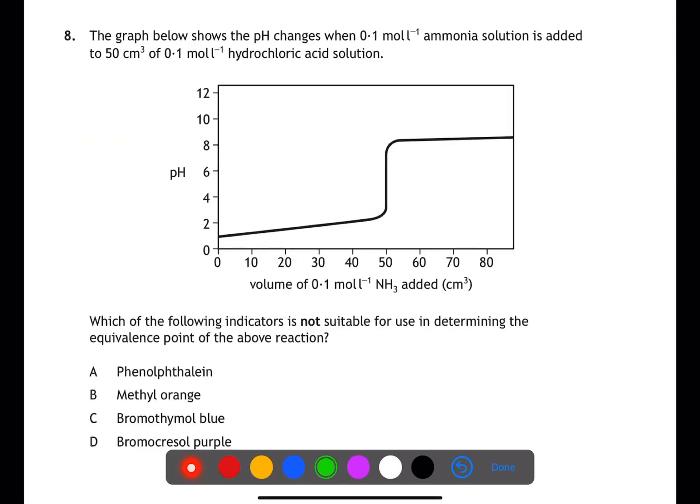To find the equivalence point of the reaction, we need to look at the vertical part of the graph. We have to find what pH range this spans. This graph spans between about 2 and 7. This means that we need an indicator which will change colour over this pH range.